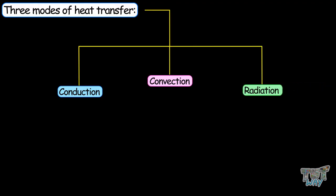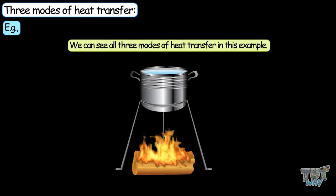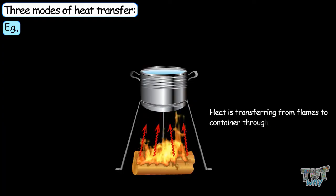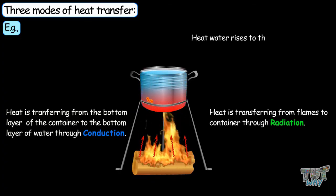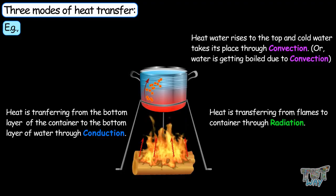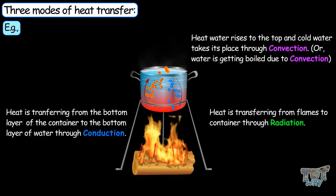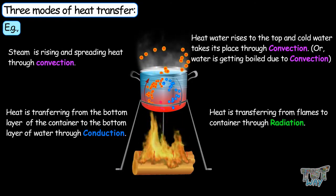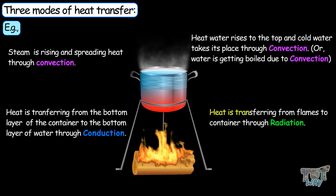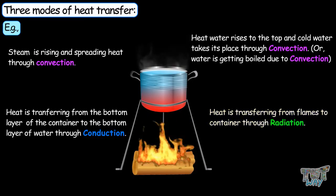So we learned three modes of heat transfer: convection, conduction, and radiation. Here is a combined example using all three — a fireplace being used for heating water. The flame produces radiation which heats the container. The transfer of heat to the water is through conduction. Hot water rises to the top through the convection process, and the water boils through convection. Steam rising up and spreading heat is also due to convection. We can feel the warmth around the fire due to radiation.